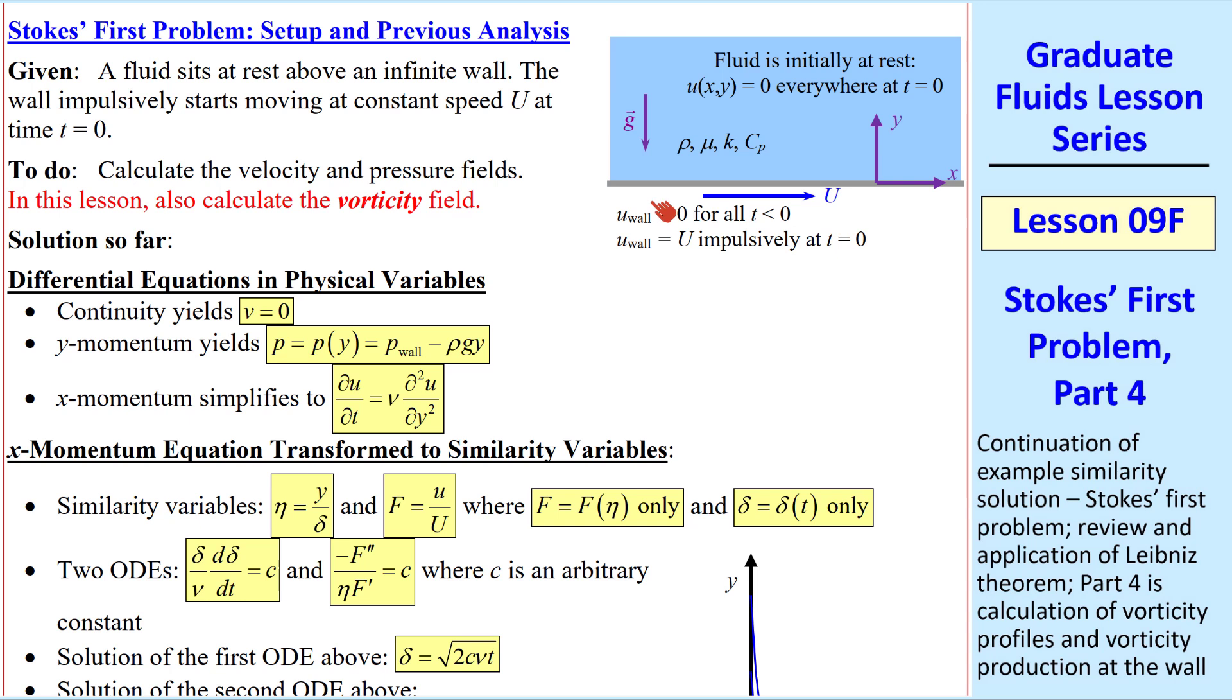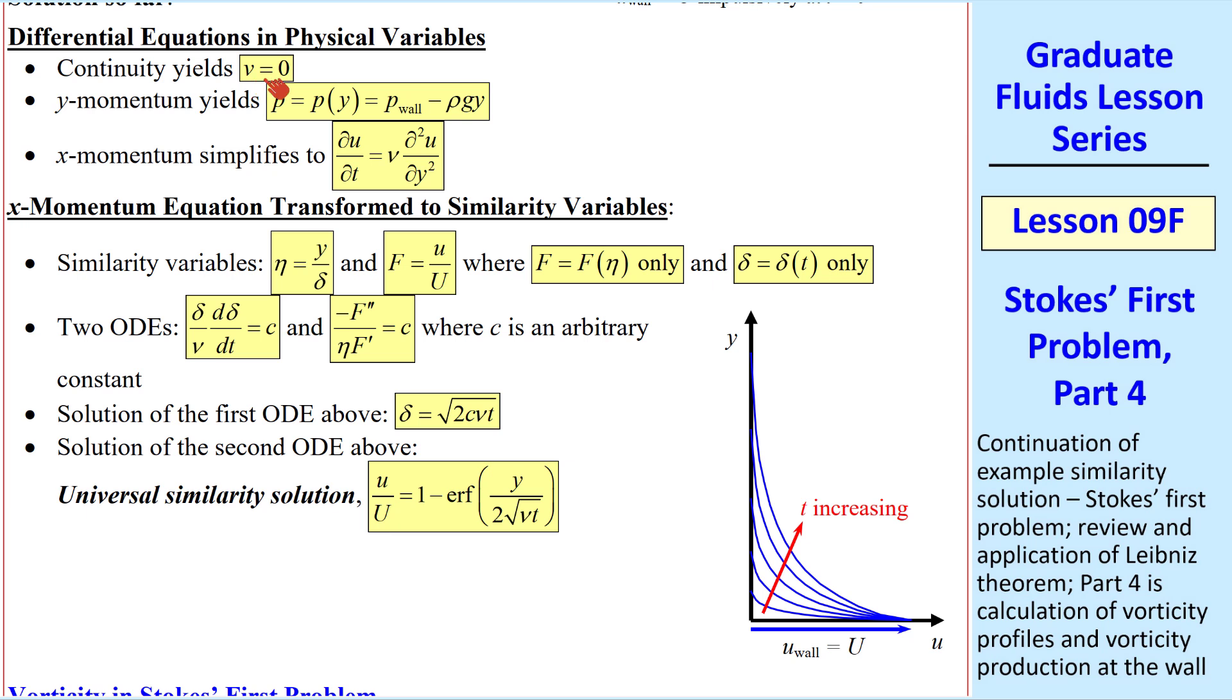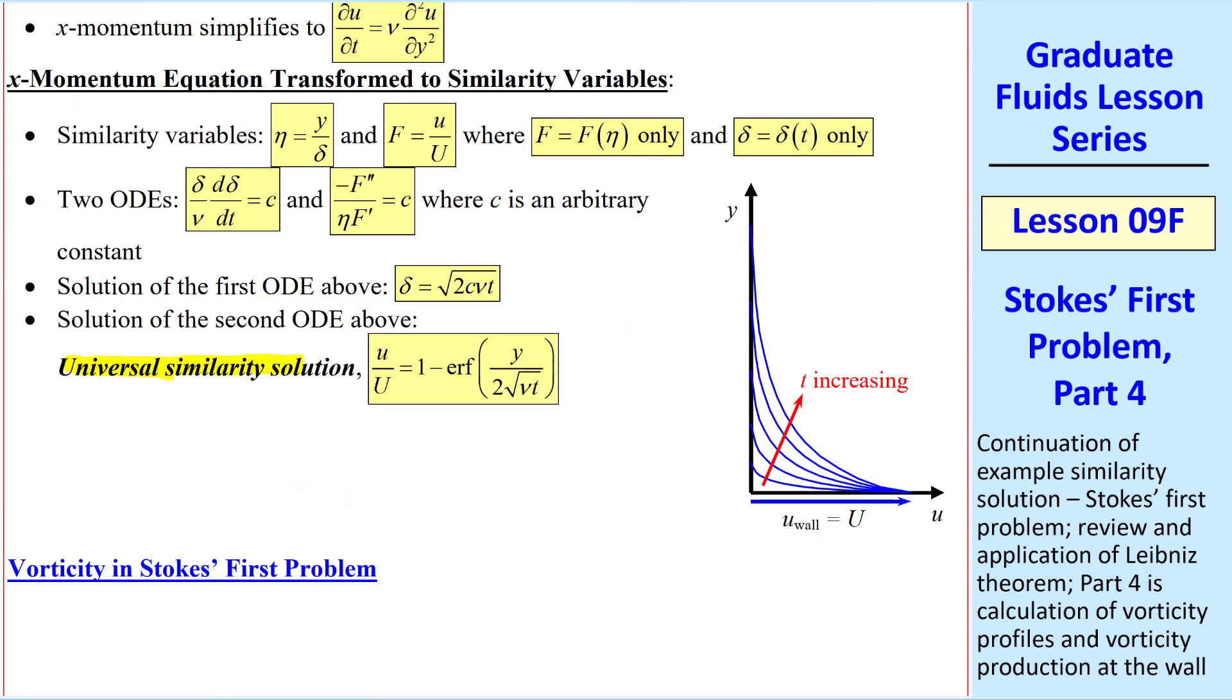This is the fourth lesson in this series, so I'll just very quickly remind you that we're talking about an infinite wall that is impulsively started at t equals zero. In our previous lessons, we solved for v, the y component of velocity, the pressure field, and the x component of Navier-Stokes, reduced to these two terms, which we solved using similarity variables, getting two ODEs, solving the first one for delta, and then the second one for the x component of velocity as a function of y and time, which when plotted looks something like this. The boundary condition at the wall is capital U, and it decays down to zero at some delta, but this universal profile just stretches as time increases. I emphasize that this is a universal similarity solution, valid for any y, t, and kinematic viscosity nu, provided that the flow remains laminar.